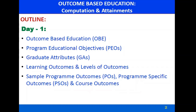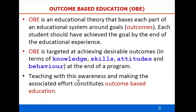So every faculty should be able to know what is OBE, what is program educational objective, what are the graduate attributes, what are the learning outcomes and what are the various levels of outcomes, then sample program outcomes and program specific outcomes. So as a faculty role, with this knowledge, whatever the course you are handling, you have to know about the course outcomes of your course.